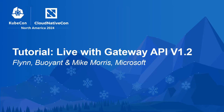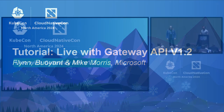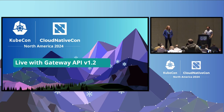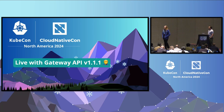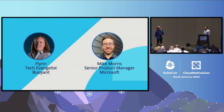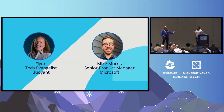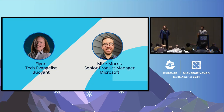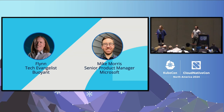I'm Flynn, and I'm Mike, and welcome to Live with Gateway API 1.2 — or 1.1. I'm a tech evangelist for Linkerd, and I'm a senior product manager at Microsoft working on upstream open source things: Istio, Gateway API, and multi-cluster stuff. We are also two of the chairs for the GAMMA Initiative within Gateway API, bringing Gateway API to service mesh, which is the reason why we're doing this talk.